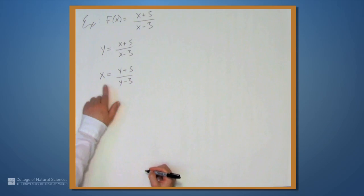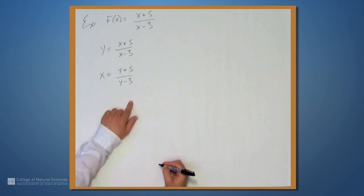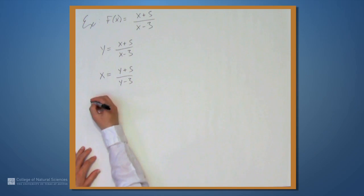Now, we have to solve for y in terms of x. It's a little bit more complicated in this example, but it's the same process. The first thing we should do here is get this y minus 3 out of the denominator. I'll multiply both sides by y minus 3. On the left-hand side, we end up with x times the quantity (y minus 3) equals y plus 5.